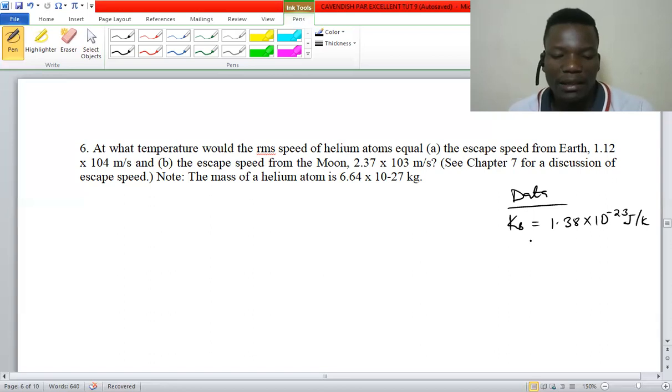Here we're going to solve a question under thermophysics. At what temperature would the RMS (root mean square) speed of helium atoms equal (a) the escape speed from Earth, 1.12 × 10^4 m/s, and (b) the escape from the Moon? We've been given the mass of the atom to be 6.64 × 10^-27 kg.